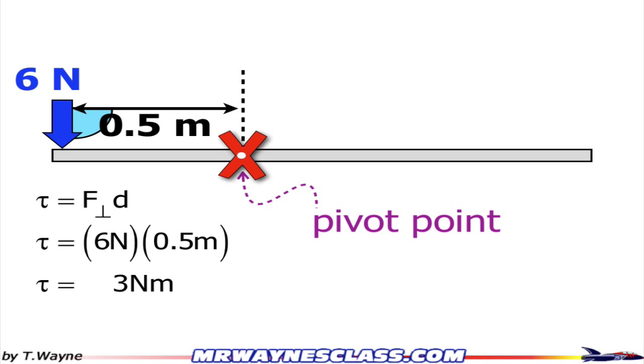Notice the symbol for torque is the Greek letter tau, which is kind of that, looks like a capital T, but a little bit fancier. So it's three newton meters.